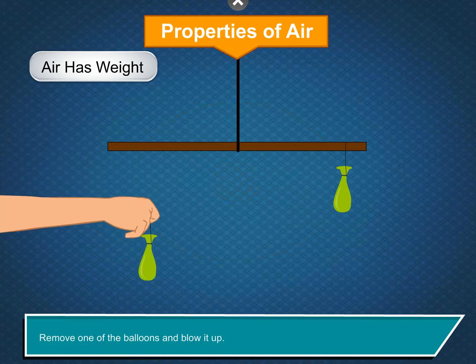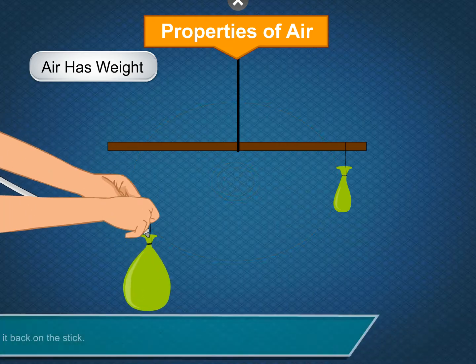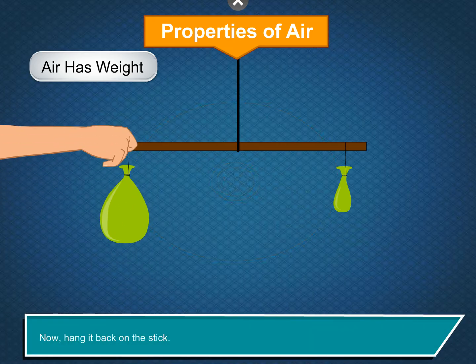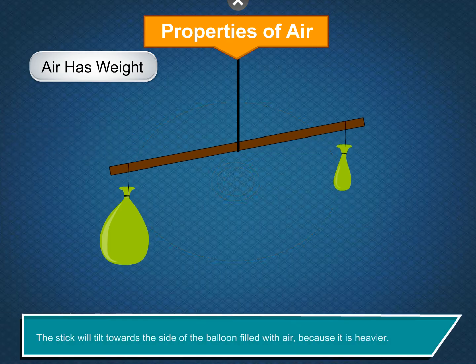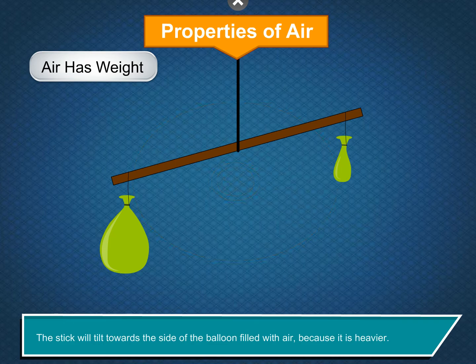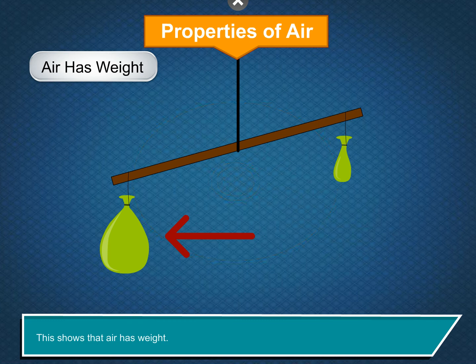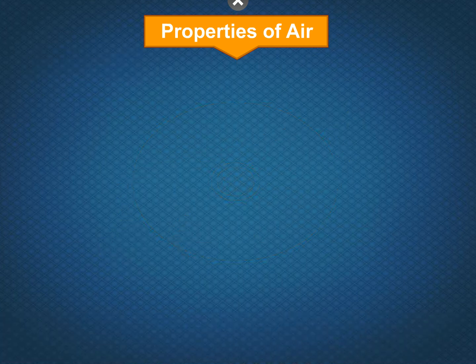Remove one of the balloons and blow it up. Now hang it back on the stick. The stick will tilt towards the side of the balloon filled with air because it is heavier. This shows that air has weight.